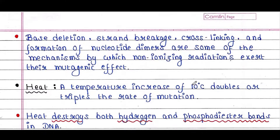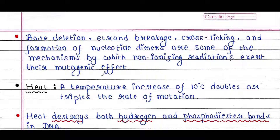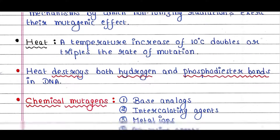Base deletion, strand breakage, cross-linking, and formation of nucleotide dimers are some of the mechanisms by which non-ionizing radiations exert their mutagenic effect.